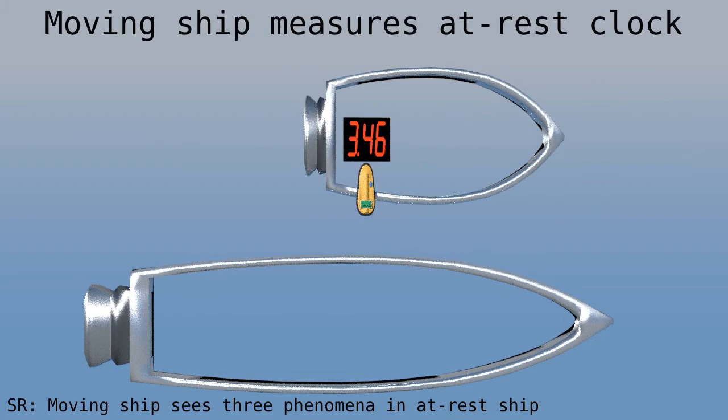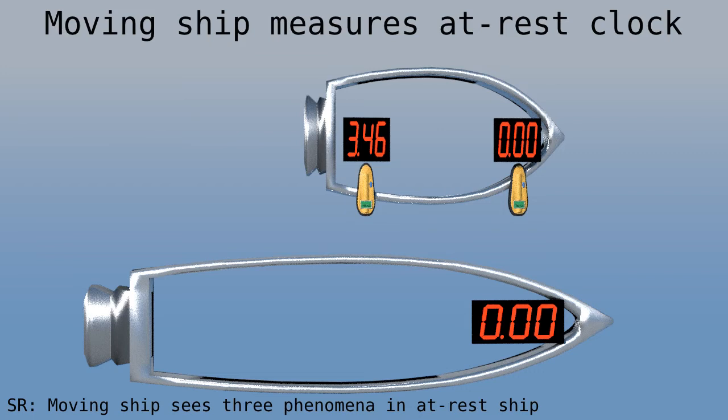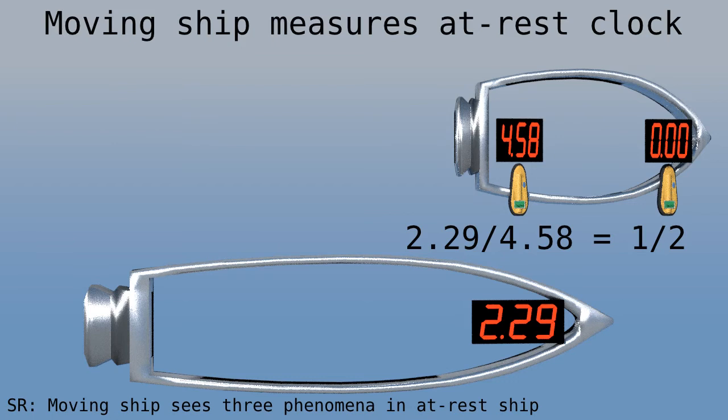Now let's have the moving ship do the same thing. At the first detector, both ships have time zero, but notice that the rear clock is desynchronized, it's ahead. Now the ship moves with clocks that tick at half rate. It takes 2.29 seconds for the second detector to reach the same point. It ticked slowly but started ahead, so now it shows 4.58 seconds, twice as much as the clock at rest. In other words, the moving ship measures the faster clock to be slower.